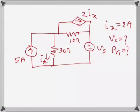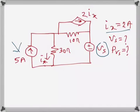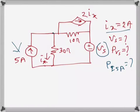Here we need to find the value of Vs. Ix is given as 2 amps. We also need to find the power dissipated or absorbed by Vs and this 5A current source. In order to do that, we will start by applying KCL.